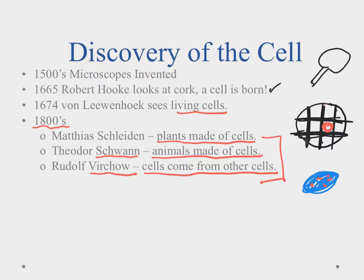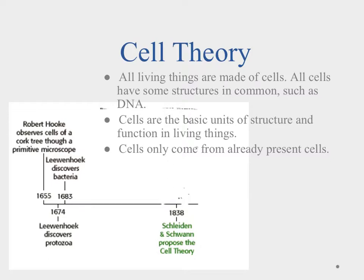Rudolf Virchow said that cells came from other cells. These three statements became very defining of our entire idea of the cell. The cell theory was proposed in 1838 by Schleiden and Schwann. It has three parts: the first says that all living things are made of cells, and that all cells share some common components — the biggest being DNA.